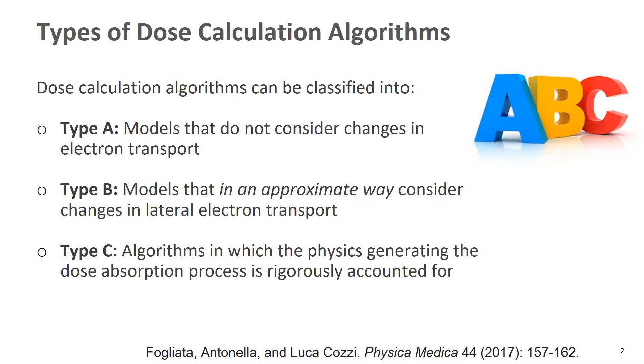Type A algorithms are models that do not consider changes in electron transport. Type B are models that in an approximate way consider changes in electron transport. And type C are models in which the physics generating the dose absorption process is rigorously accounted for.